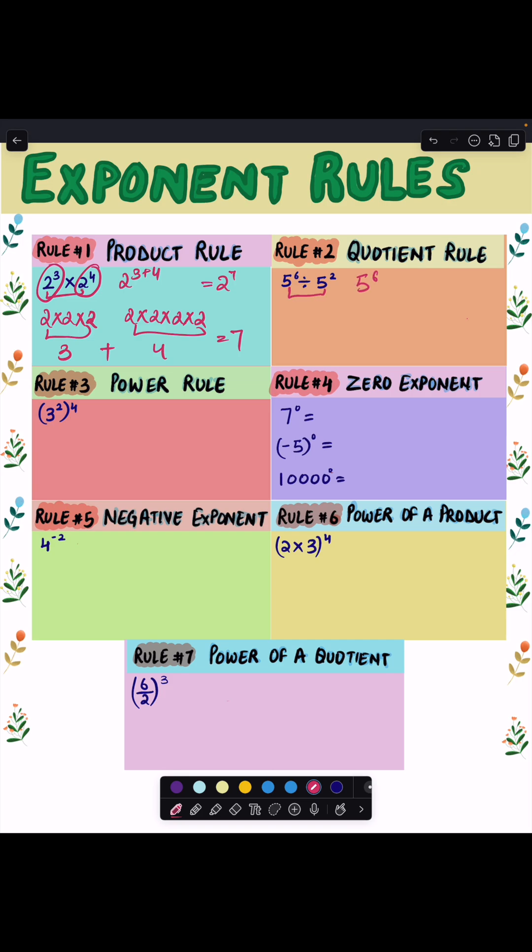Rule number two is the quotient rule, and it says when you divide numbers with the same base, just subtract the exponents. Let's see how.